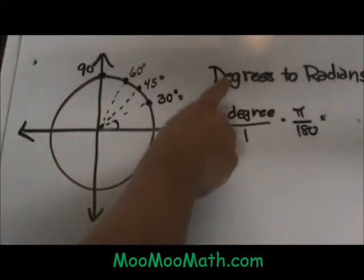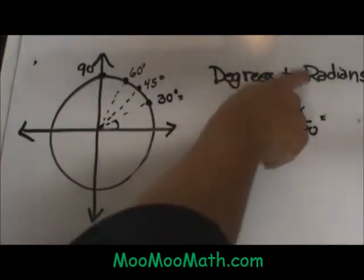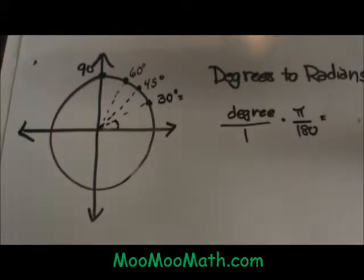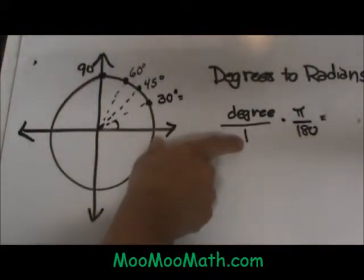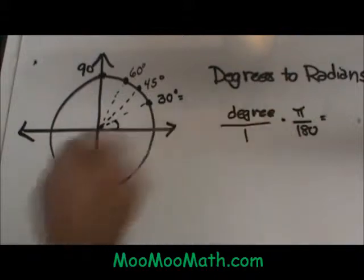Today we are going to look at how to convert from degrees to radians when using the unit circle. The basic formula is you take your degree over one times pi over 180.